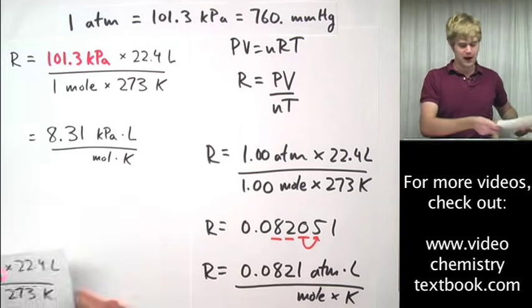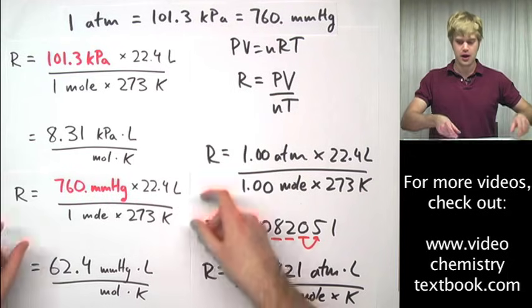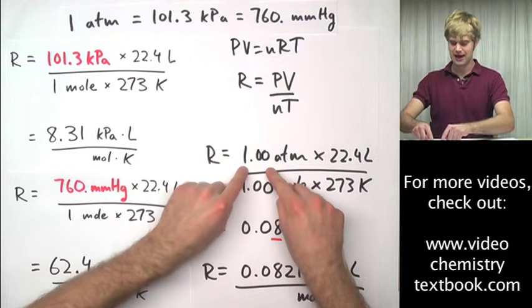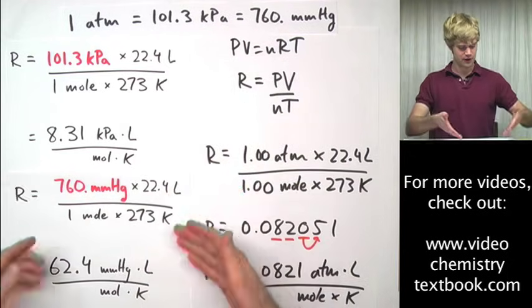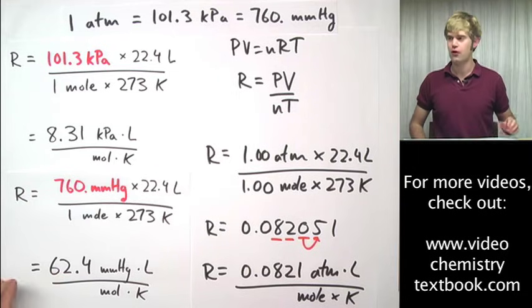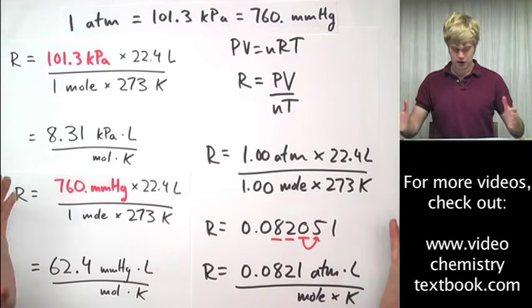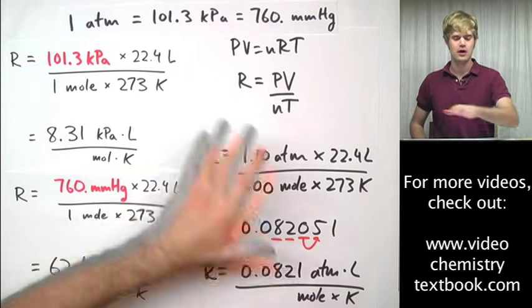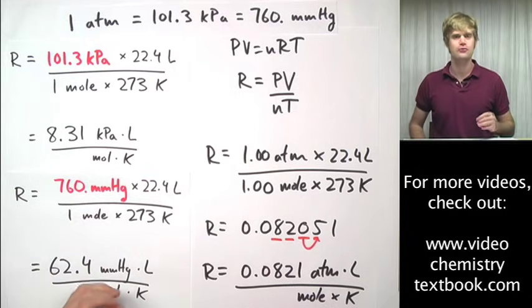Or I could take millimeters of mercury, 760, plug that in instead of one atm. I go through and I get 62.4 millimeters of mercury. That quickly shows you the math you can do to find out where R came from in the first place.